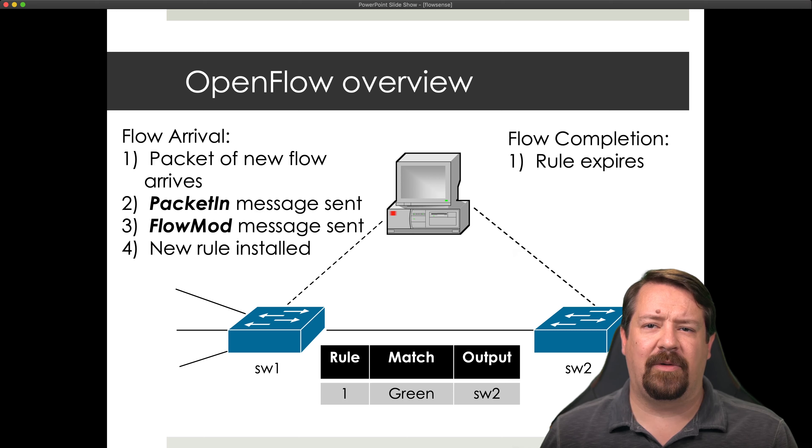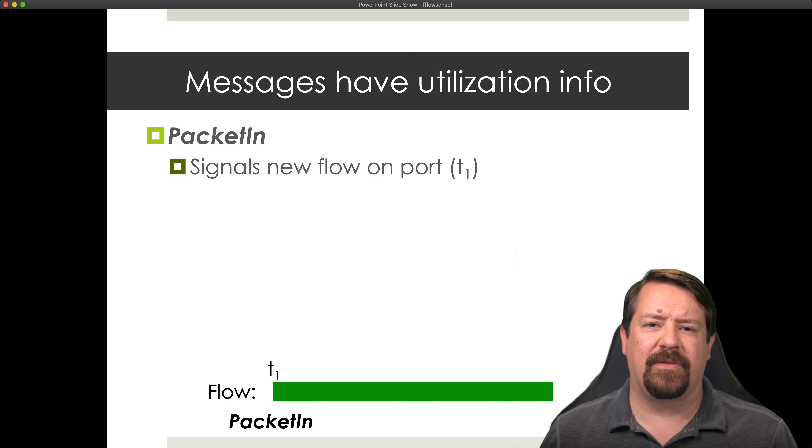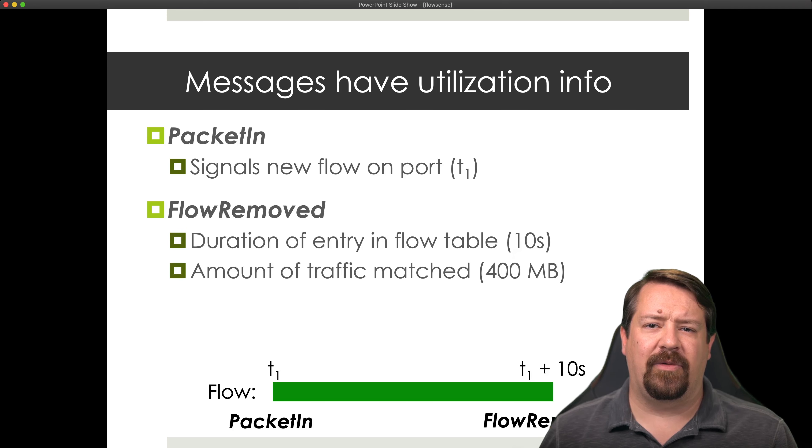In either case, when the flow is removed, a message is sent to the controller containing the statistics for that flow. So when the controller observes the packet in message, it knows that a new flow has started on a particular port. And when the flow is removed, it then has the duration for that flow, as well as counters that tell it how many packets and bytes match that particular rule. Then it could infer the average utilization contributed by that particular flow on the link that it's using.